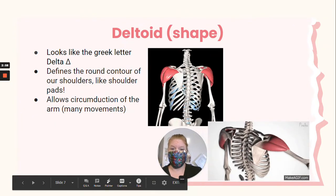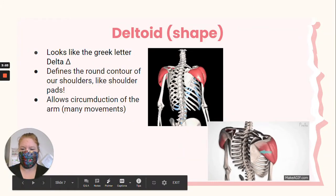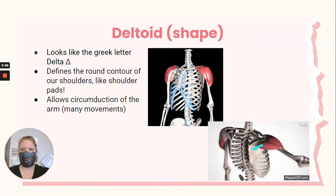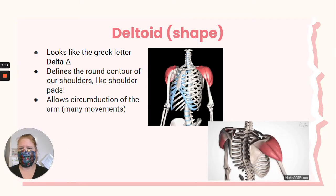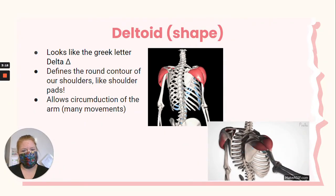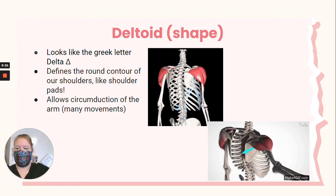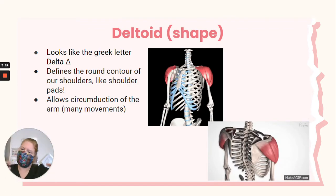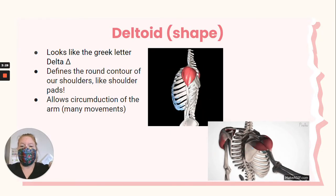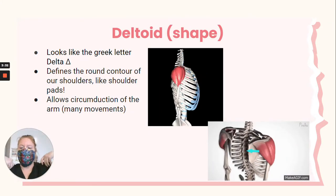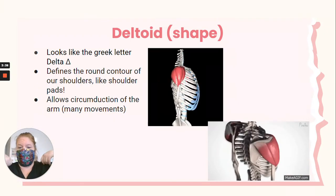Now the deltoid is also named for its shape, like the trapezius. The deltoid is like the Greek letter delta. It defines those rounded corners of your shoulder — kind of looks like shoulder pads, the shoulder pads for your skeleton. And it allows circumduction of the arm, so many movements: abduction, adduction, rotation, flexion. The deltoid is responsible for so much movement at the ball and socket joint where your arm attaches to your torso.